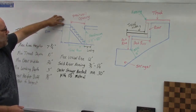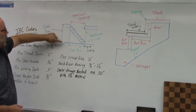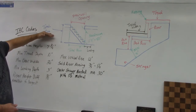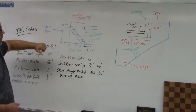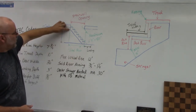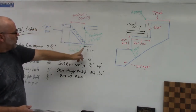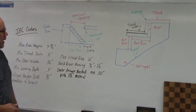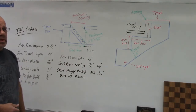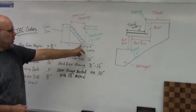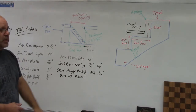Now for some other terms: total rise is the distance from the top of one floor to the top of the other floor, and this number is used in your staircase calculations. Total run is the distance from the back side of the stringer to the end of the stringer at the bottom, and that's used to determine where the staircase will land at the bottom.